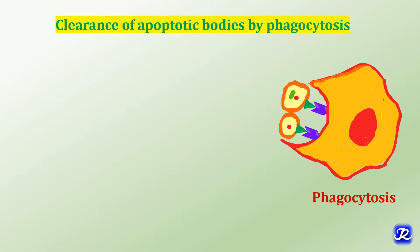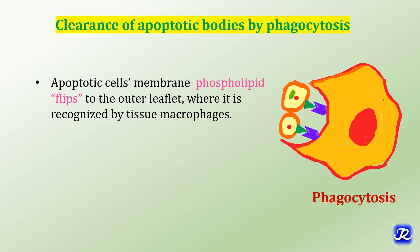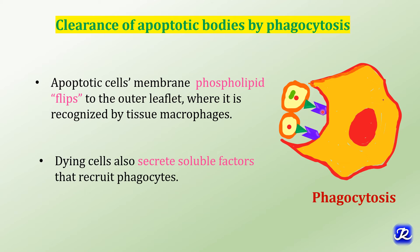How are apoptotic bodies engulfed by phagocytosis? Apoptotic cells' membrane phospholipid flips to the outer leaflet — this phospholipid membrane flip is recognized by receptors on tissue macrophages. In addition, dying cells secrete soluble factors that recruit phagocytes. Phagocytosis of apoptotic cells is so efficient that dead cells disappear without leaving a trace and inflammation is virtually absent.